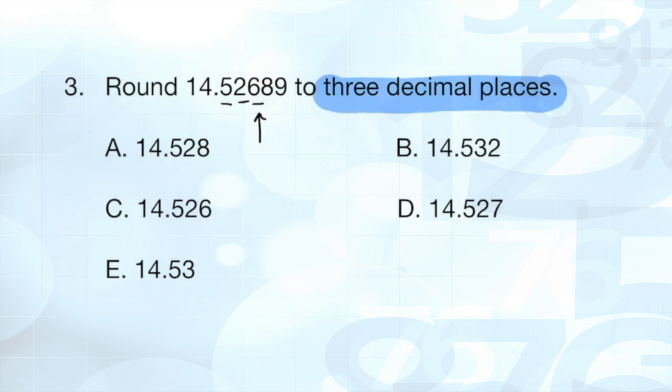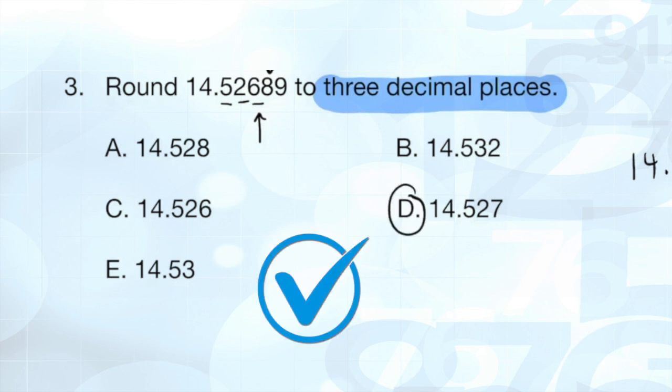Just rounding rules, right? If it's five or above, we're going to round up. If it's less than five, we're going to round down. Because I have an 8 here, I'm going to round this 6 up to 7. And so we should be at 14.527. The correct answer is going to be choice D.